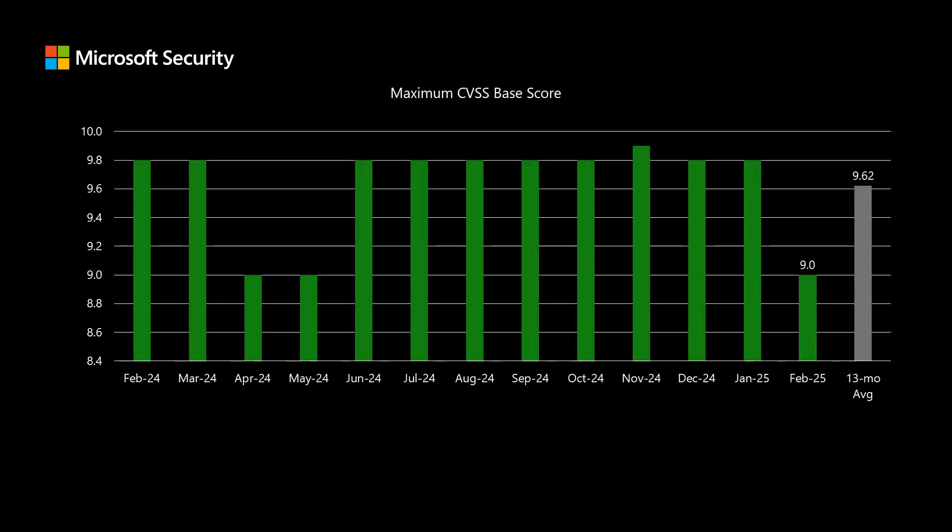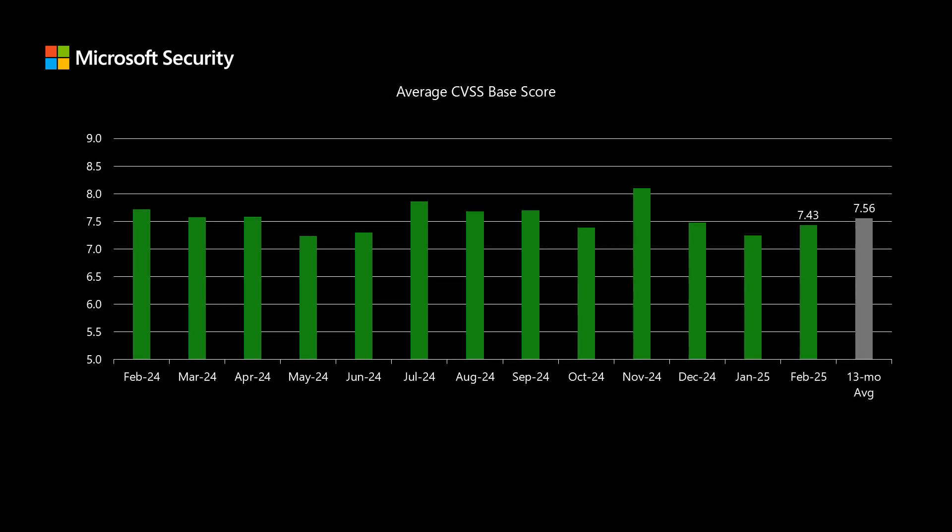Next, I'll talk to scoring, where Microsoft uses the Common Vulnerability Scoring System, or CVSS. This is a standardized scoring system between 0 and 10, where 10 represents the most risk. This month, the highest-scored CVE comes in at 9.0 on that scale of 10. We've been averaging just around 9.6 per month over the past 13 months. As far as the average score across the entire release — all 58 vulnerabilities — that average score comes in at 7.43, which is a little bit lower than our average over the past 13 months of 7.56.